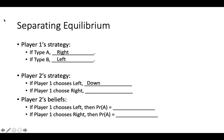If player 1 chooses left, then player 2 should play down, and if player 1 chooses right, then player 2 should play up. The last part of the equilibrium are player 2's beliefs. If player 1 chooses left, then player 2 knows that player 1 is type B, so player 2 should believe that the probability that player 1 is type A is 0. Similarly, if player 1 plays right, then player 2 knows that player 1 is type A, so player 2 should believe that the probability that player 1 is type A is 1.